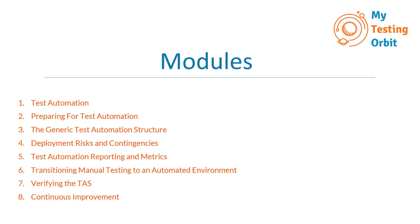Let's have a quick look at the modules. The syllabus looks quite lengthy compared to the foundation one, but I assure you it will be quite interesting. Module one is about test automation — an introduction and objectives of test automation, including advantages and disadvantages. Module two is preparing for test automation. Module three is the generic test automation structure. Module four is deployment risks and contingencies. Module five is test automation reporting and metrics. Module six is transitioning manual testing to an automated environment. Module seven is verifying the TAS — test automation solution. Module eight is continuous improvement.